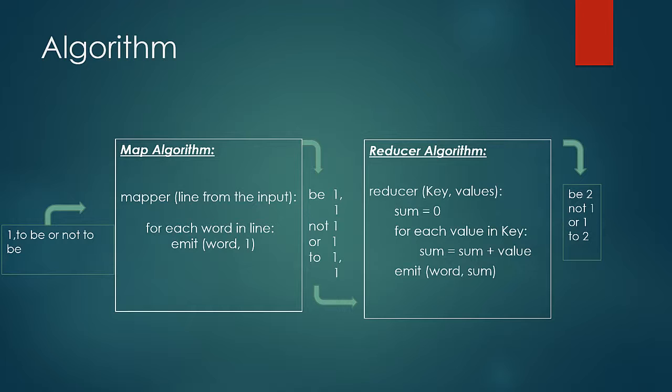Please note that every time you would see the same structure of the reducer. It would have initialization followed by iterations of values over the key, and the function ends with the output of key and value.